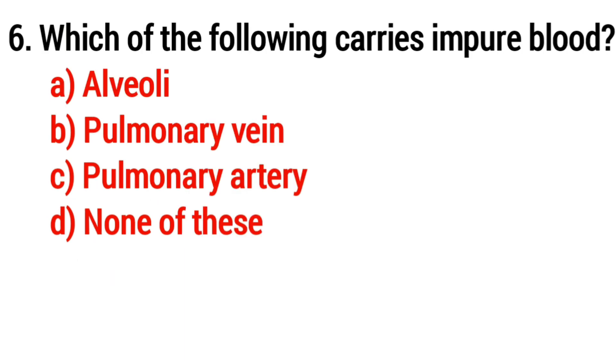Question number six: Which of the following carries impure blood? Answer: option C, pulmonary artery.